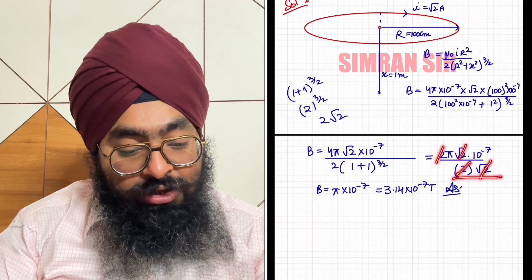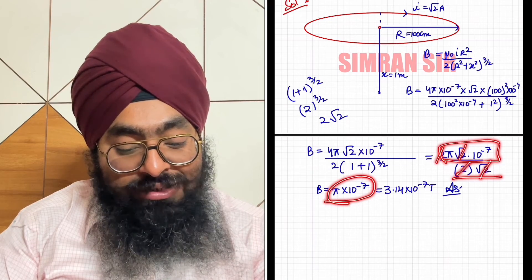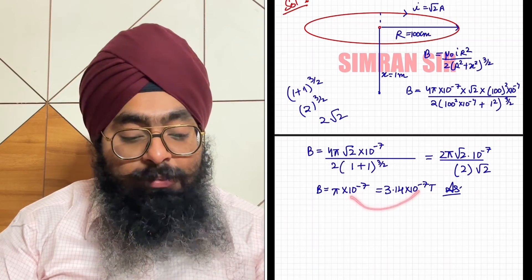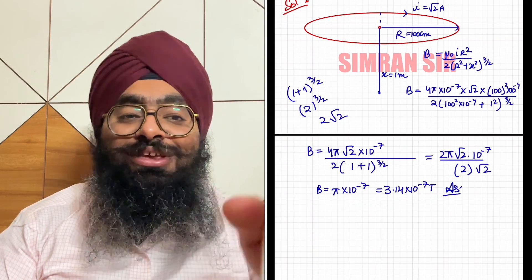Again 2 and 2 cancel, root 2 and root 2 cancel. So we get π × 10^(-7). The value of π is 3.14 and 10^(-7) as it is. So in Tesla, this will be the right answer for this question. Thank you for watching.